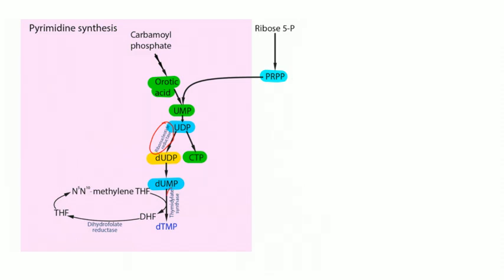Removing a phosphate from deoxy-UDP gives deoxy-UMP. Then thymidylate synthase converts deoxy-UMP to deoxy-TMP; thymidylate synthase uses tetrahydrofolate — the metabolically active form of folic acid. So you need folic acid to synthesize nucleotides and DNA. Thymidylate synthase uses a carbon from tetrahydrofolate, leaving dihydrofolate. To regenerate tetrahydrofolate you need the enzyme dihydrofolate reductase.